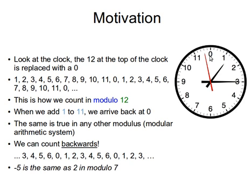In modulo 12, numbers are always between 0 and 11. So in general, in modulo n, the numbers are always between 0 and n minus 1. If you count: 1, 2, 3, 4, 5, 6, 7, 8, 9, 10, 11, and then 0, then one again — we go round and round and numbers are always between 0 and n minus 1. When we add 1 to 11 we arrive back at 0, and so on.